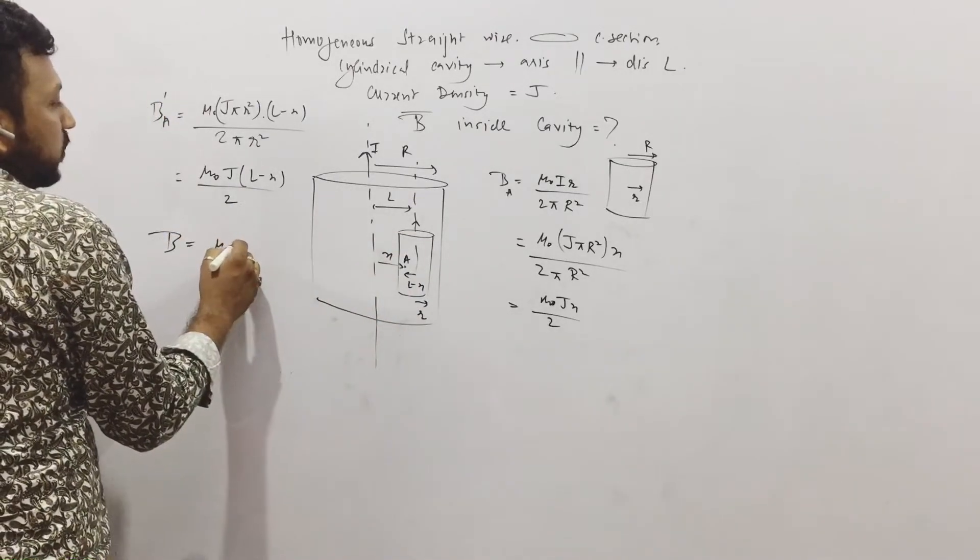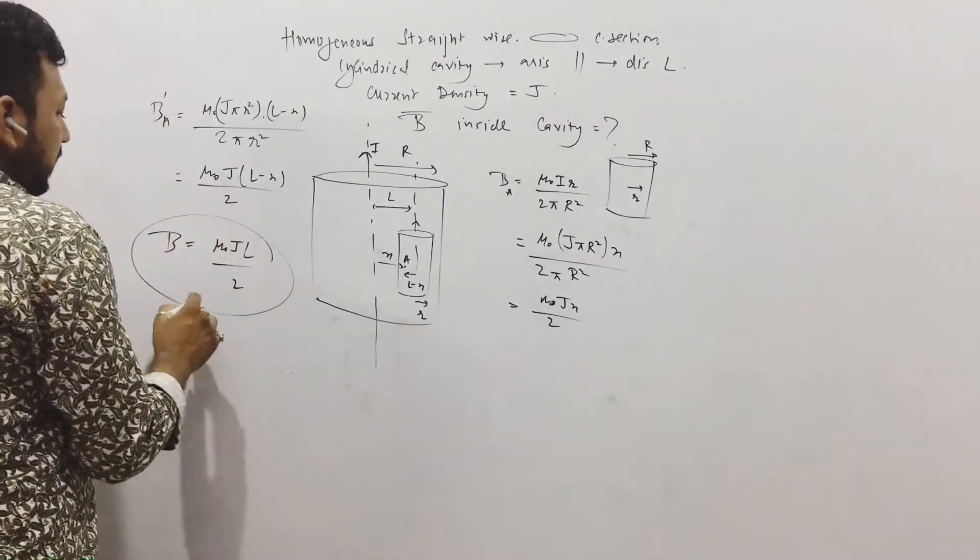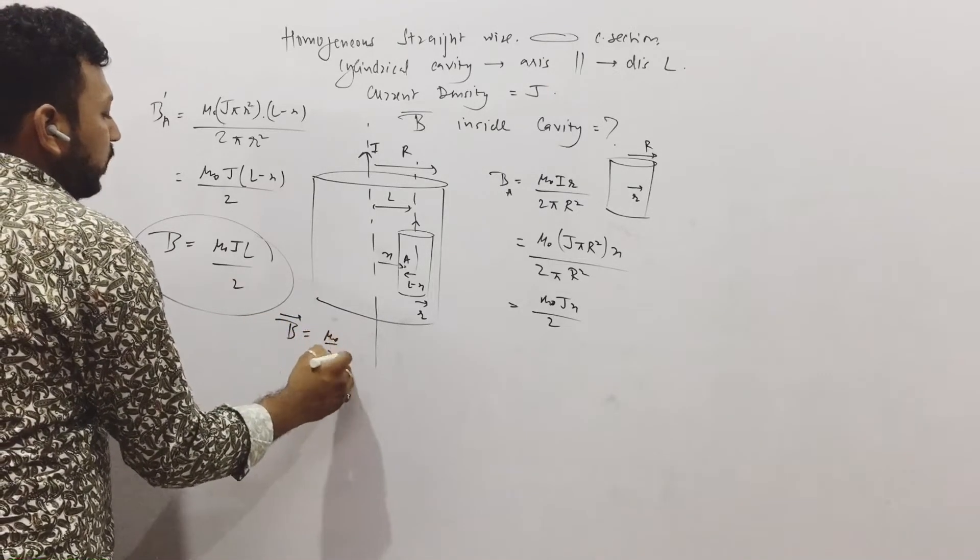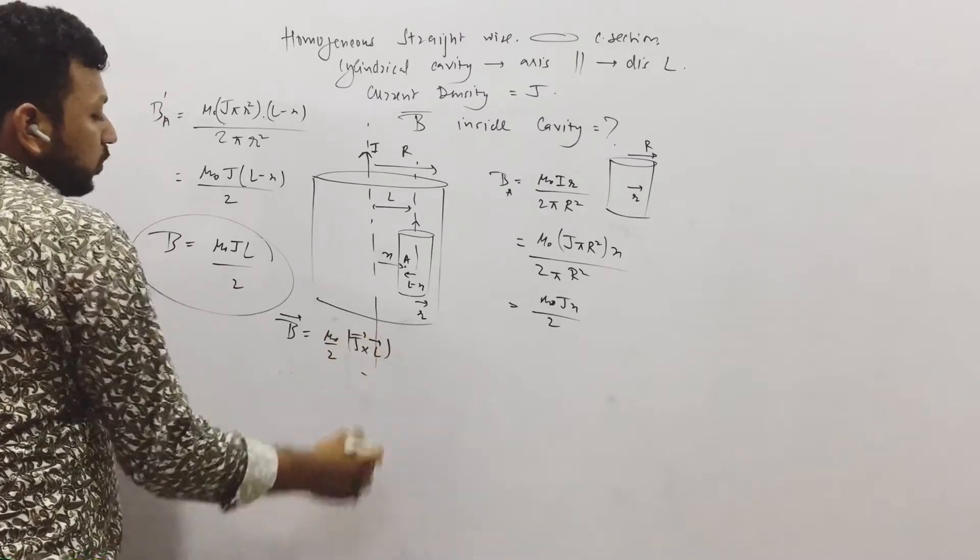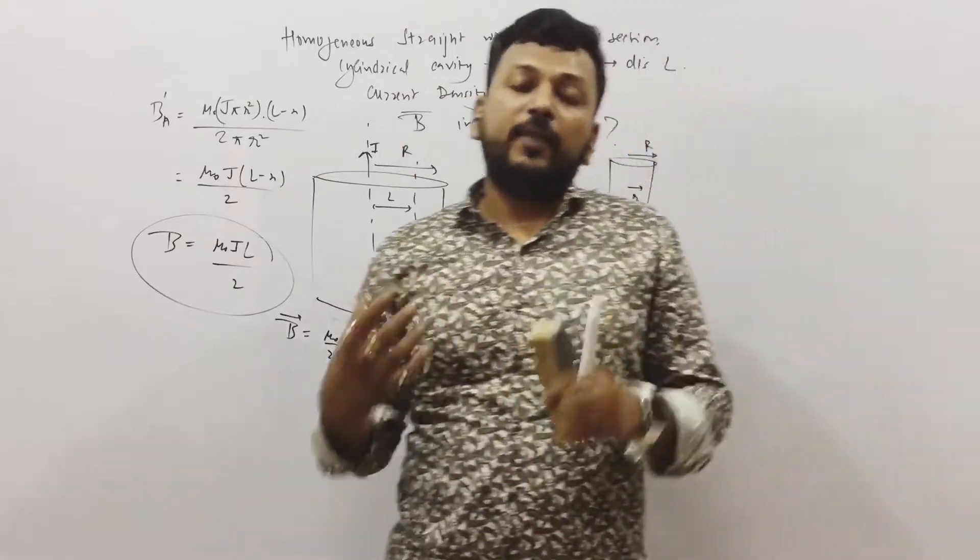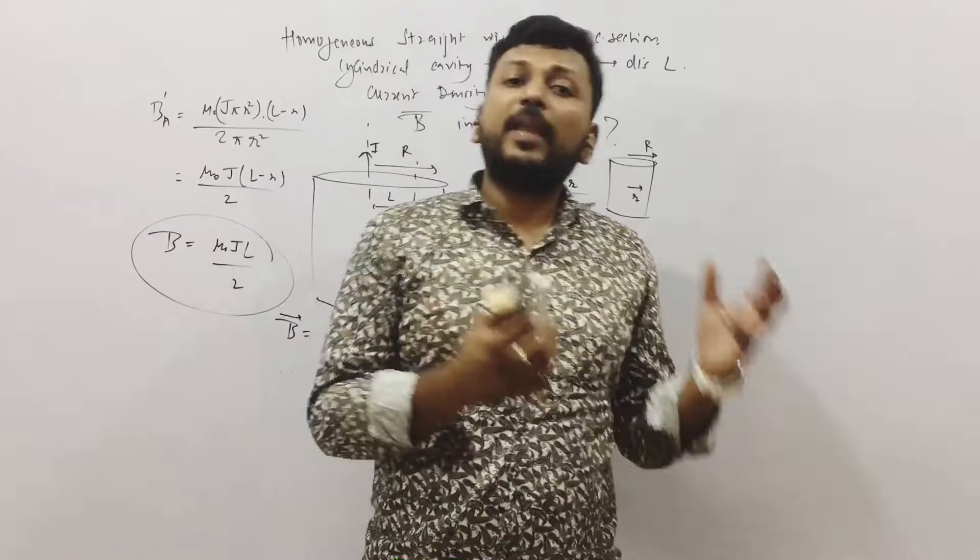Mu naught J x plus L minus x cancel, so it's mu naught JL by 2. In the vector form, it can be written as mu naught by 2 J cross L. That can also be done. But this is how the cavity question has to be solved.